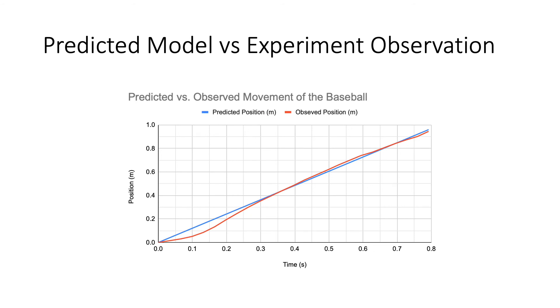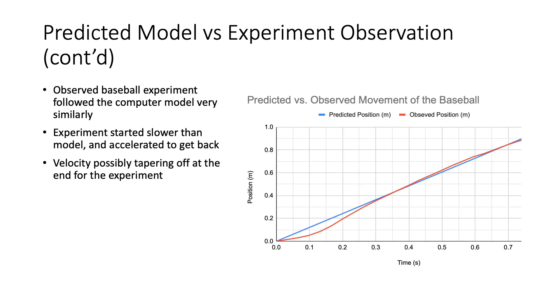Here is a graph that compares the predicted model to the experiment observation. The predicted model in GlowScript is identified as the blue line, and the true movement of the baseball is defined as the red line. So some notes on this graph. I observed that the baseball experiment followed the computer model very closely, a lot closer than I at least predicted.